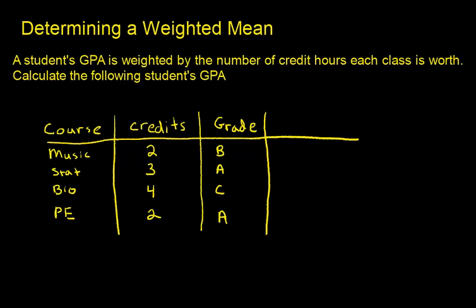In this video we're going to discuss how to determine a weighted mean. So a student's GPA is weighted by the number of credit hours each class is worth.